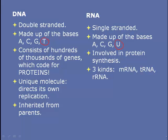DNA consists of hundreds of thousands of genes which code for proteins. This is its big job and its big claim to fame. It's a unique molecule in that it directs its own replication, and we don't know of too many other molecules, except for prions, that do that. DNA is also inherited from parents.